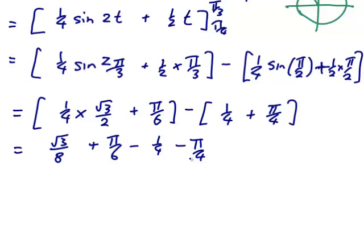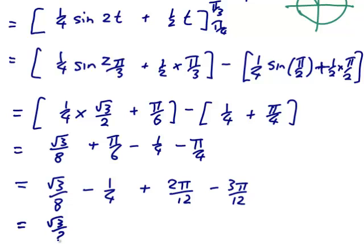I could put them over a common denominator. √3/8 - 1/4 + 2π/12 - 3π/12. Which will give us √3/8 - 1/4 - π/12.